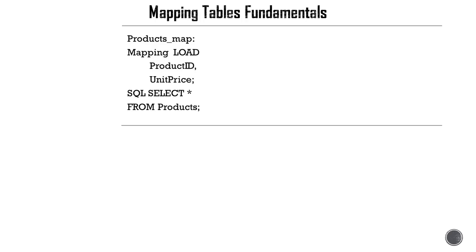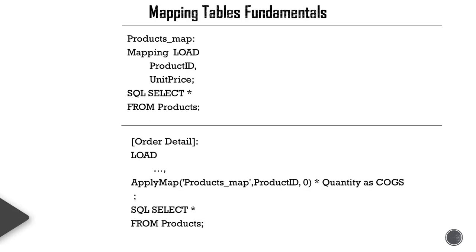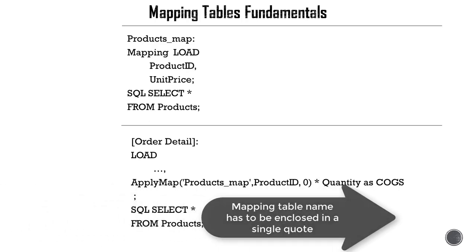Once the mapping load table gets created, it has to exist before you apply it to the target table. In this case, we're using the Products_map, which has been enclosed in single quotes, and the second parameter is the key field. In this case, the key field is matching between the Orders Detail and Products_map, but you don't necessarily have to have the same name.